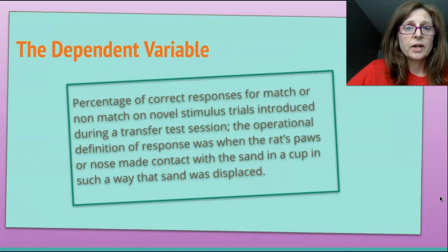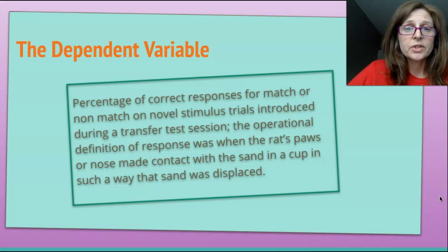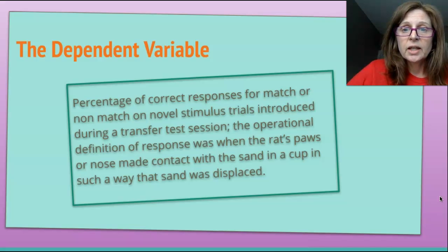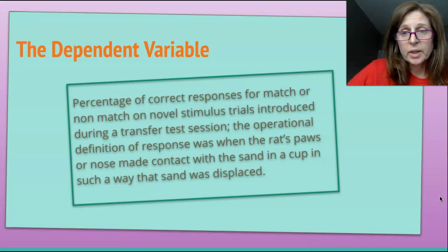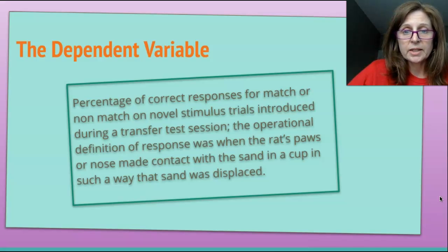The dependent variable was the percentage of correct responses for match or non-match on novel stimulus trials introduced during a transfer test session. The operational definition of response was when the rat's paws or nose made contact with the sand in a cup in such a way that the sand was displaced.